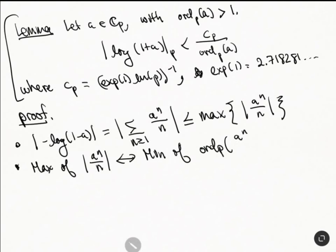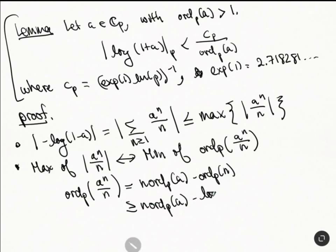And we can just compute that directly. The p-adic valuation of a^n over n is equal to n times ord_p(a) minus ord_p(n). And so I'm just going to replace this by a logarithm. This is log base p. So this isn't a p-adic logarithm now, this is just a usual logarithm, log base p of n.